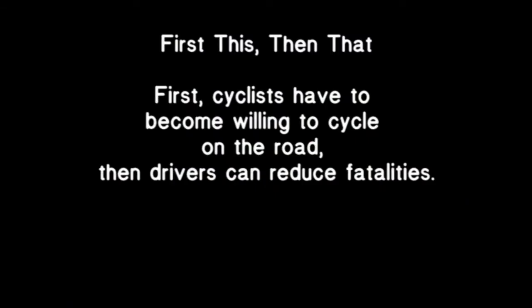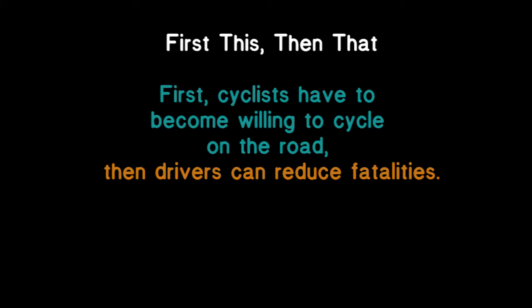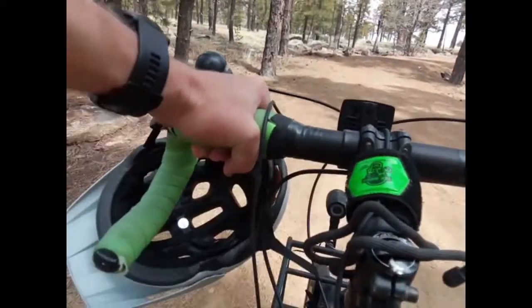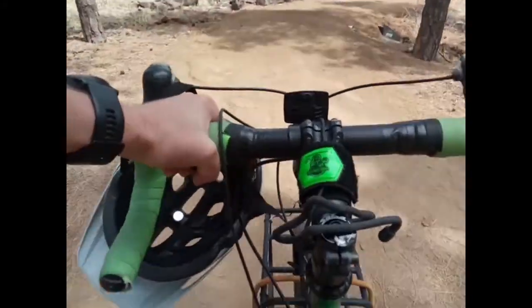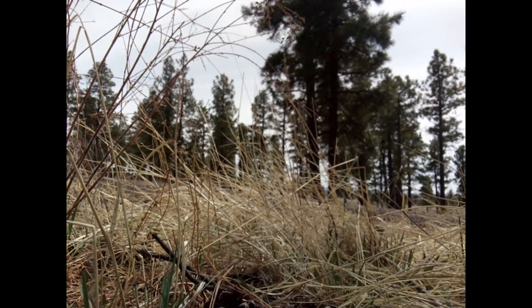First this, then that: first, cyclists have to become willing to cycle on the road, then drivers can reduce fatalities. This part comes first and this part comes after. Okay, this starts to make some sense — it feels like there's a sequence of first, second. But then you could easily argue that putting the ideas the other way around would maybe make more sense. We can do better.